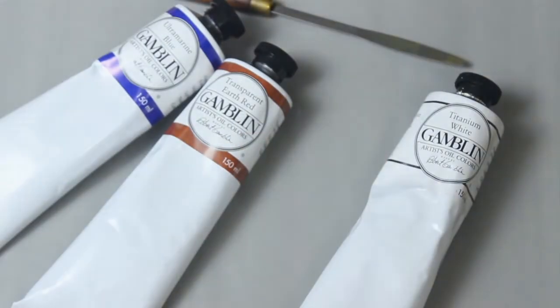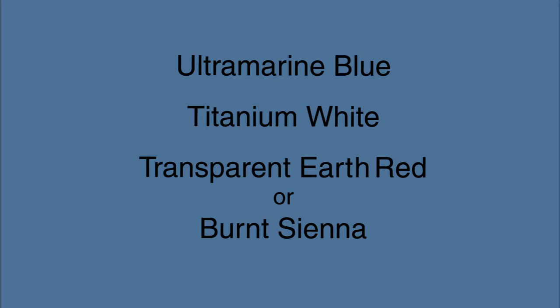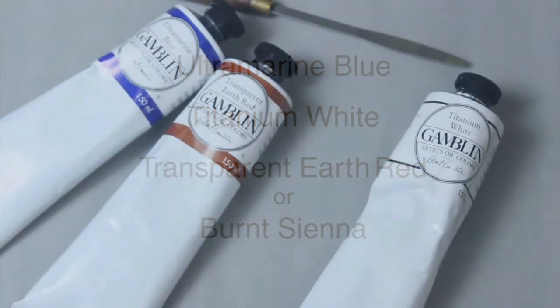I typically refer to this technique as mixing by volume, and I'll be working with these three colors: Ultramarine Blue, Titanium White, and Transparent Earth Red. If you don't have Transparent Earth Red, you can substitute Burnt Sienna.